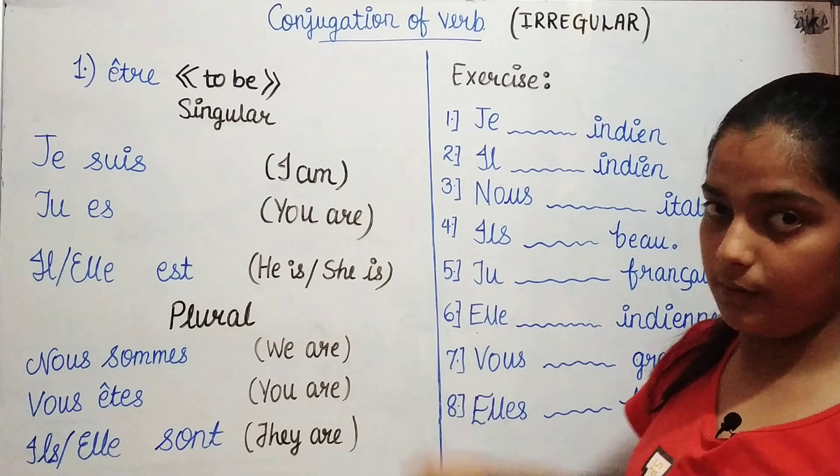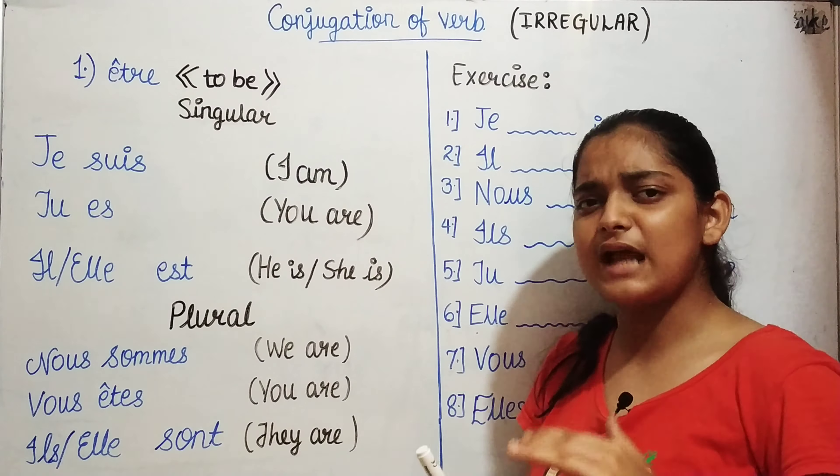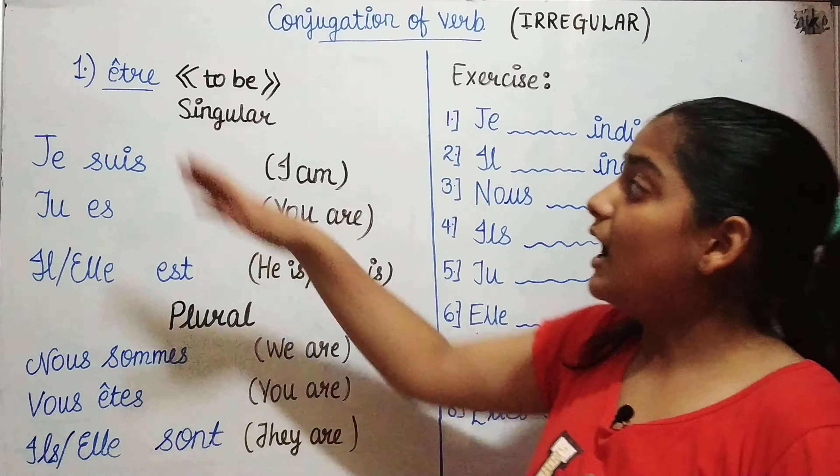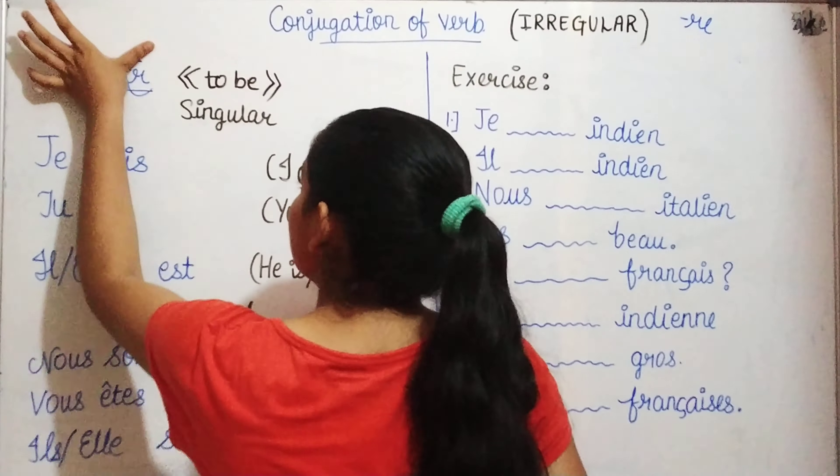This is an irregular verb. We are going to start with very basic verbs and then move to more complex verbs. The verb être is irregular because it is not conjugated the same way the other verbs with the RE ending are conjugated.